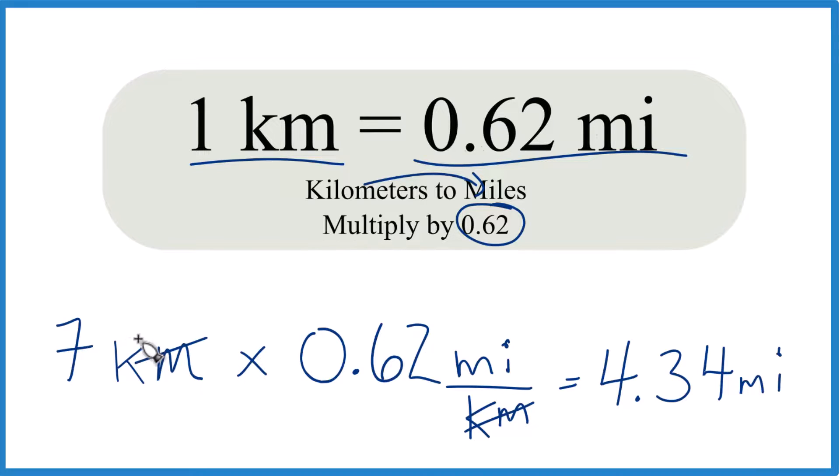So when we convert seven kilometers, when we change this to miles, we end up with 4.34 miles. That's how you do it.